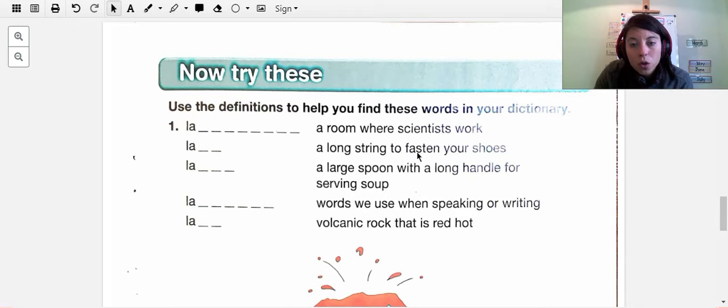A long string to fasten your shoes. A large spoon with a long handle for serving soup. So you have to look up the words L-A-L-A. Look at the spaces you have, or how many letters the word has. So the first word is a really long word. This one is a really short word. And this is a medium word.